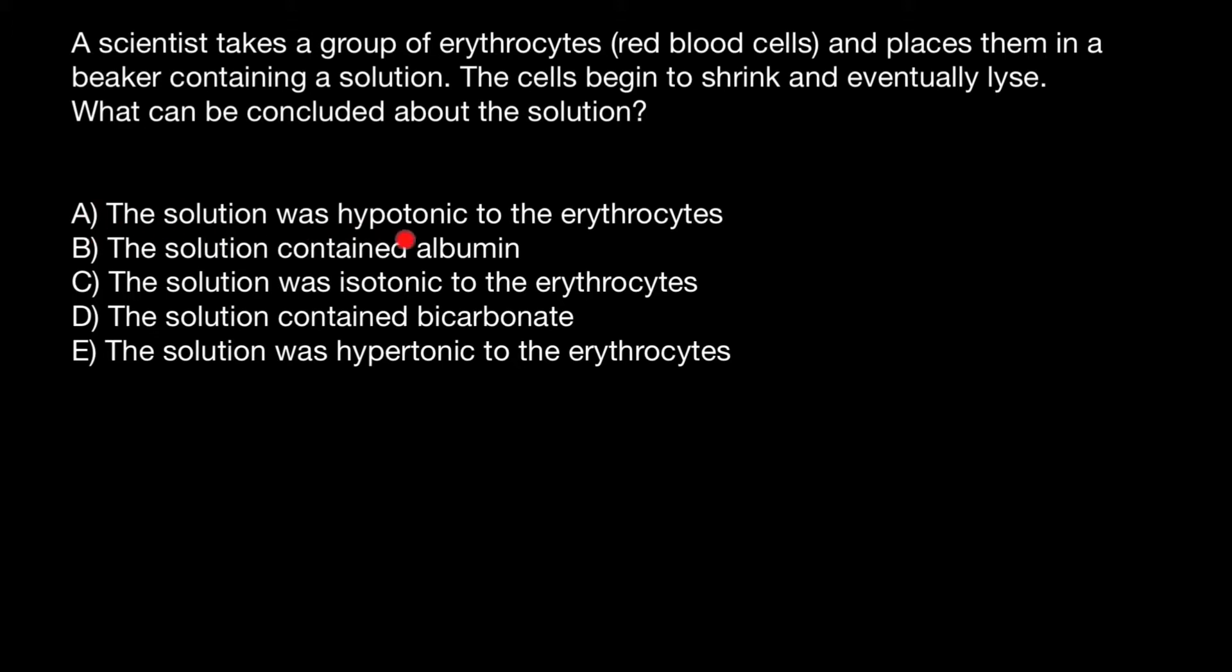The first variant A: the solution was hypotonic to the erythrocytes. Let's imagine that here's a blood serum. I show this with blue color because usually we show with blue color water, and serum is mostly water, though it is actually slightly yellowish color. And here's a single red blood cell.